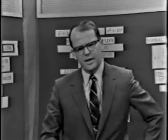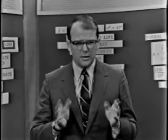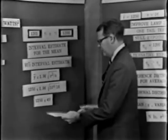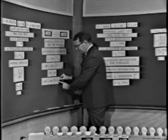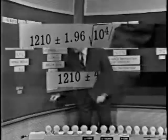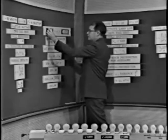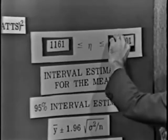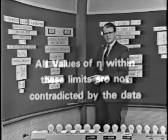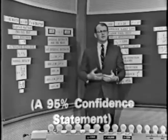Think conceptually of another set of 16 observations. Suppose we had taken 16 more and the average had come out 1,210. That would have given us 1,210 plus or minus 49, so the interval statement for the mean would have been as low as 1,161 and as high as 1,259. All values of eta within those limits are not contradicted by the data — this is a 95% confidence interval statement for the mean.